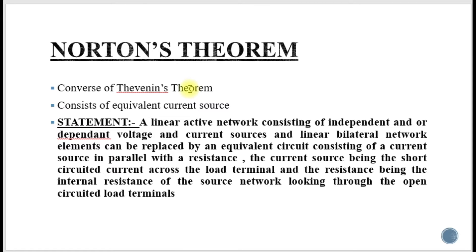Instead of an equivalent voltage source, here we are considering an equivalent current source. The current generator is placed in parallel to the internal resistance. The statement for Norton's theorem is that a linear active network consisting of independent or dependent voltage and current sources and linear bilateral network elements can be replaced by an equivalent circuit consisting of a current source in parallel with a resistance. The current source being the short circuit current across the load terminal.